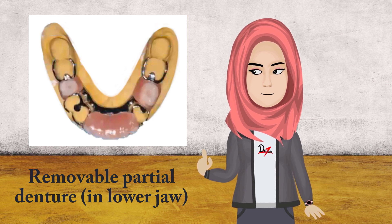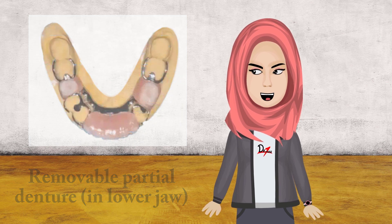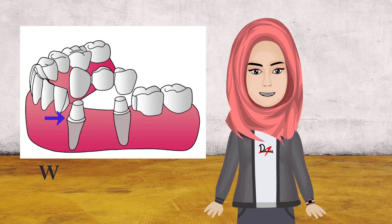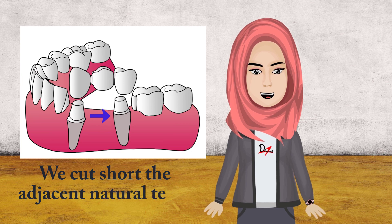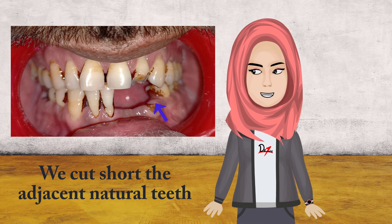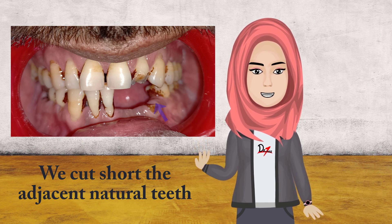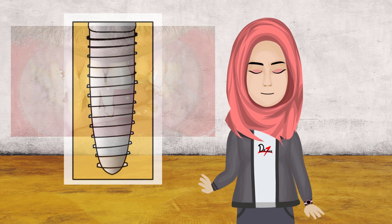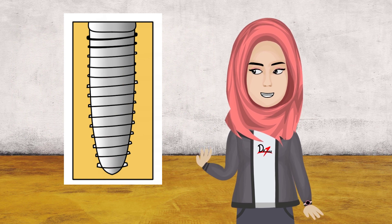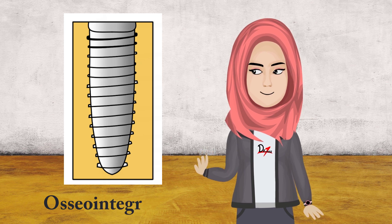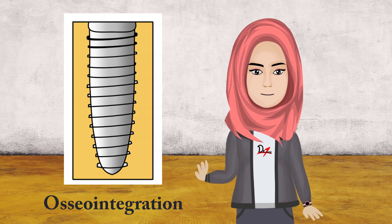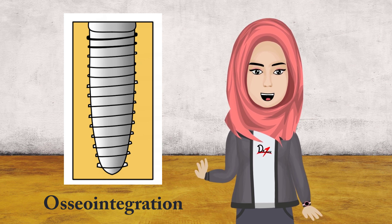For a fixed option with multiple missing teeth, one choice is a bridge. In a bridge, we prepare the tooth adjacent to the missing teeth and, with the support of your natural tooth, we place a bridge. However, if the number of missing teeth is more, the natural tooth may not be suitable for such a long span. In that case, a bridge won't be suitable either. With implants, we place individual screws in your bone and give time for osteointegration — the bone fixes the implant — and on top we place crowns. This is better than a bridge because in a bridge we are cutting the natural tooth, whereas with implants we don't need to cut any natural teeth.